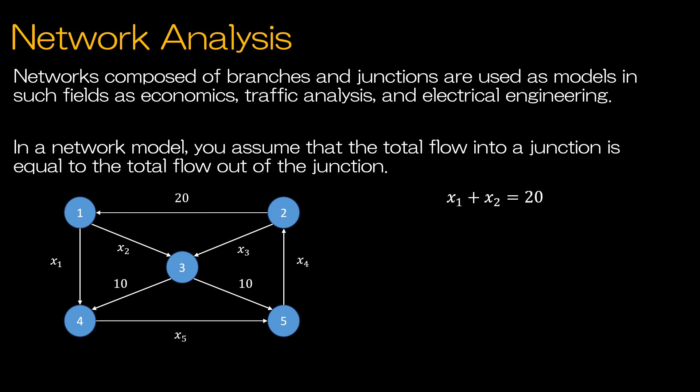I'll continue that process, keeping in mind the output should be in standard form. For junction 2, the output is 20 and x3. So 20 plus x3 should equal the input of x4, but I want this in standard form. So x3 minus x4 equals negative 20 is the equation I'll use. I'll keep that going for each junction. Looking at junction 3, I have in of x2 and x3 and out of 10 and 10, or 20. So x2 plus x3 equals 20.